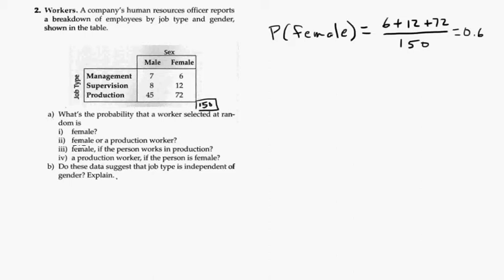So now, what's the probability that a randomly chosen employee is female or a production worker? So let's see. You need to remember the formula. The probability of A or B is equal to the probability of A plus the probability of B minus the probability of both, A and B.